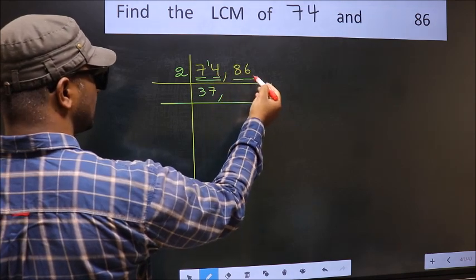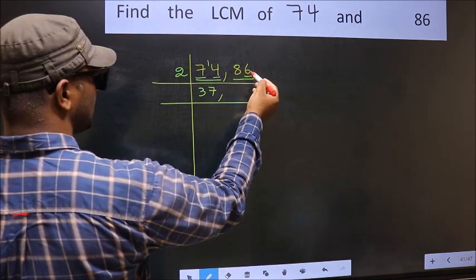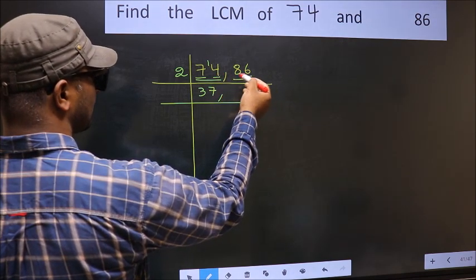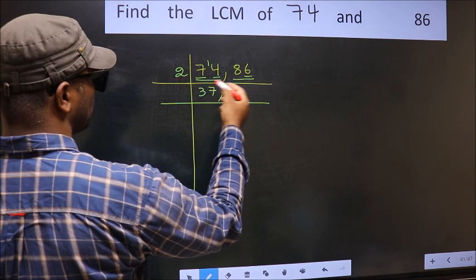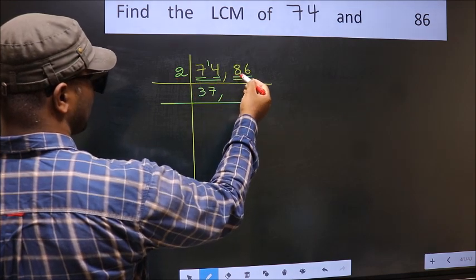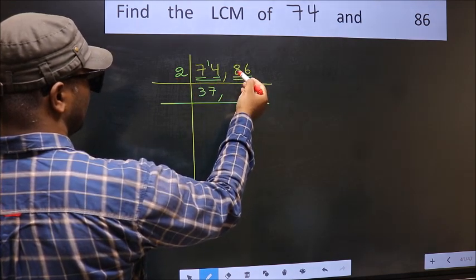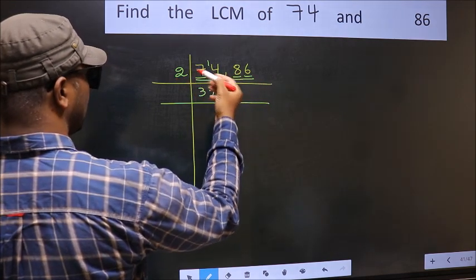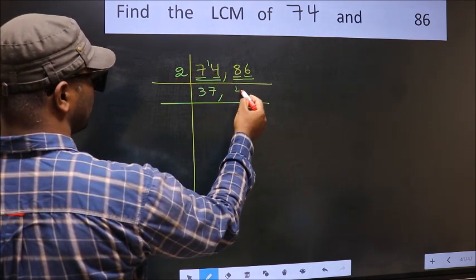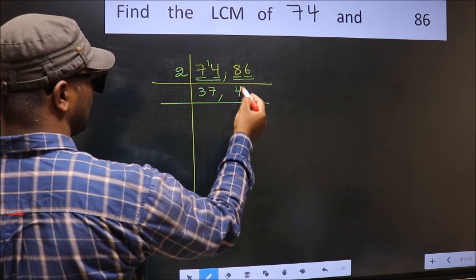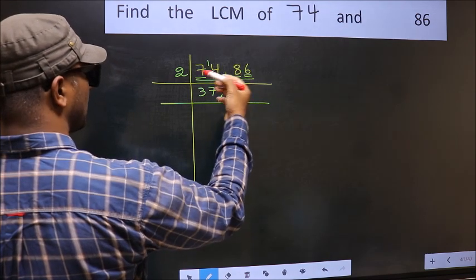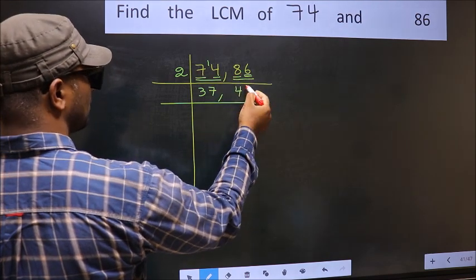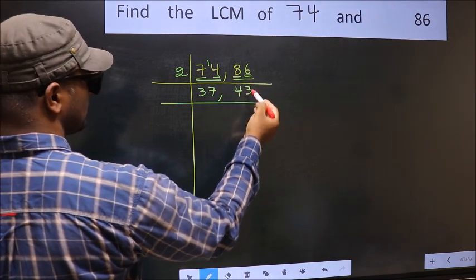The other number, 86 — last digit is 6, so it is also divisible by 2. First digit 8: 2 fours are 8. The other digit 6: 2 threes are 6. So 86 divided by 2 gives 43.